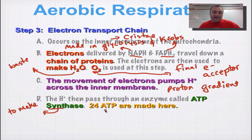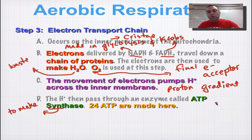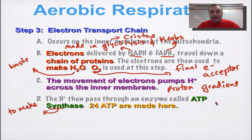24 ATP are made by the electron transport system, and 36 ATP total is made by cellular respiration. So two-thirds of them are made here during this step. It's really important that you understand that the electron transport chain is the most efficient part of the whole process of cellular respiration, and it's this part where most of the ATP is produced.